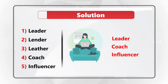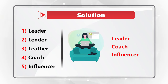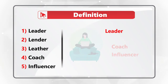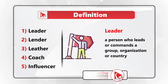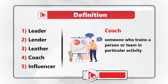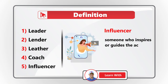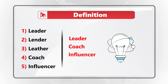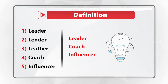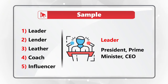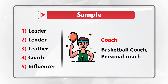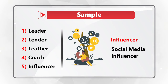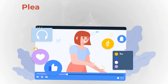The definition of leader is a person who leads or commands a group, organization, or country. Coach is someone who trains a person or a team in a particular activity. An influencer is someone who inspires or guides the actions of others. The similarity is that they represent someone in power who uses their skills to help others — for example, a leader could be a president, prime minister, or CEO; a coach could help with sports or personal development; and an influencer could have a social media following.